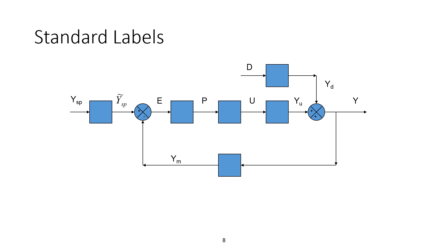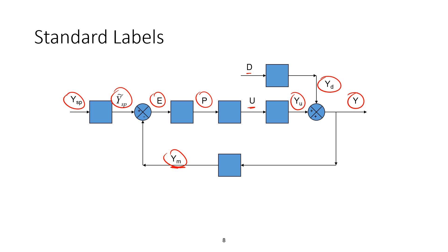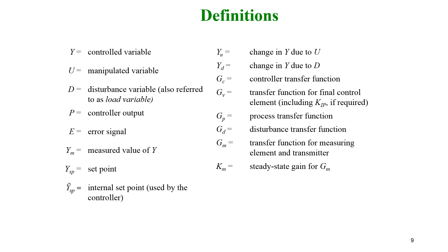First, we apply standard labels: Y is our output, YU is the Y contribution from the manipulated variable U, and YD is from the disturbance variable. We also have our measured Y value. Our set point comes in and we typically transfer it to the same units as the measurement signal — that's Y-tilde set point. We compare those two to get an error, which might be a pressure or current coming out of a PID controller, and then we have our flow rate as our manipulated value U.